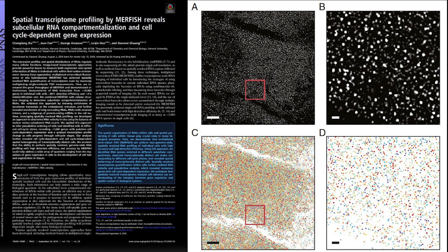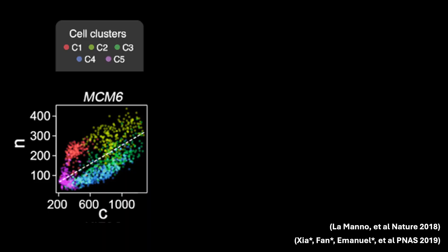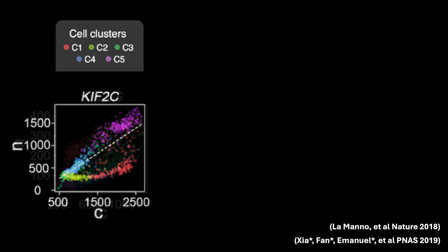As a more concrete example, let's consider this real imaging-based spatial transcriptomic MERFISH dataset of cultured U2-OS cells from our 2019 PNAS paper. Here, each point is a cell, and for this one gene, MCM6, we quantify the nuclear and cytoplasmic expression level in each cell. We can see that some cells are actively upregulating this gene with a comparatively higher nuclear to cytoplasmic ratio, while other cells are downregulating this gene with a comparatively lower nuclear to cytoplasmic ratio. And we can also do this for all the other genes that fit this model in our data, based on some minimal level of correlation between nuclear to cytoplasmic expression levels.